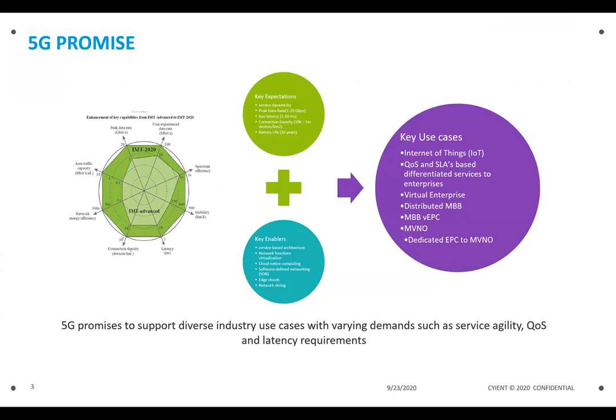There are a number of use cases that 5G is promising. But in order to support this 5G promise — to support various demands of service agility, quality of service, and latency requirements — we need an ultra-dense network. But to deploy that ultra-dense network, we need a fortune because so many small cells are involved. The total cost of ownership needs to make sense.